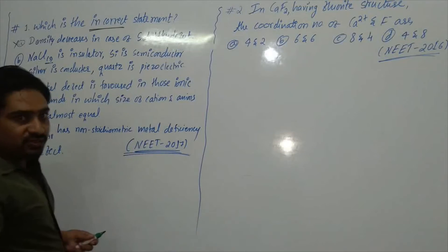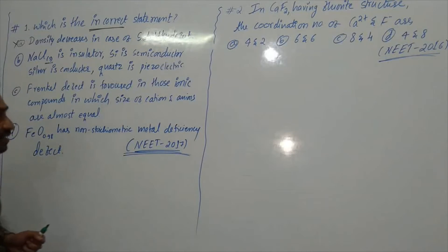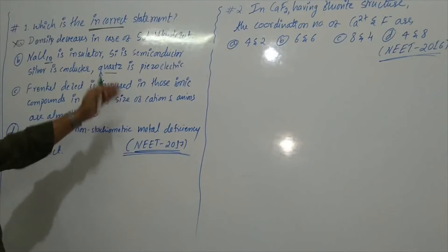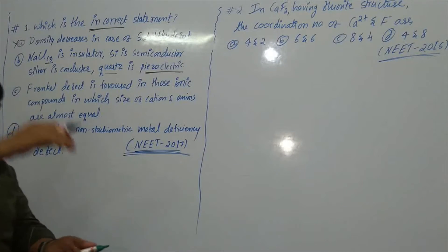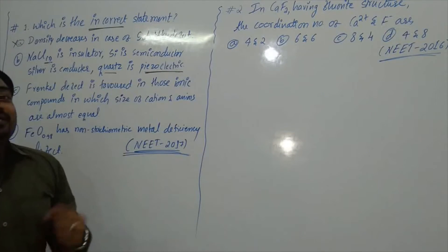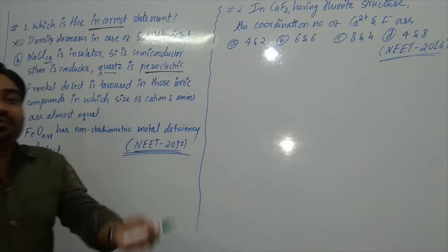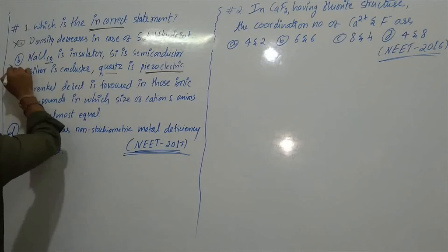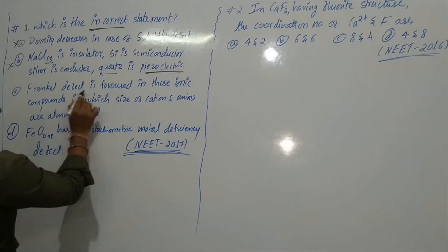Silicon is a semiconductor — yes, silicon is a good semiconductor. Silver is a good conductor. Quartz is piezoelectric — piezoelectric means the compound produces electric current on applying strain or pressure. Quartz is such a material. So this is also a correct statement and will not be our answer.